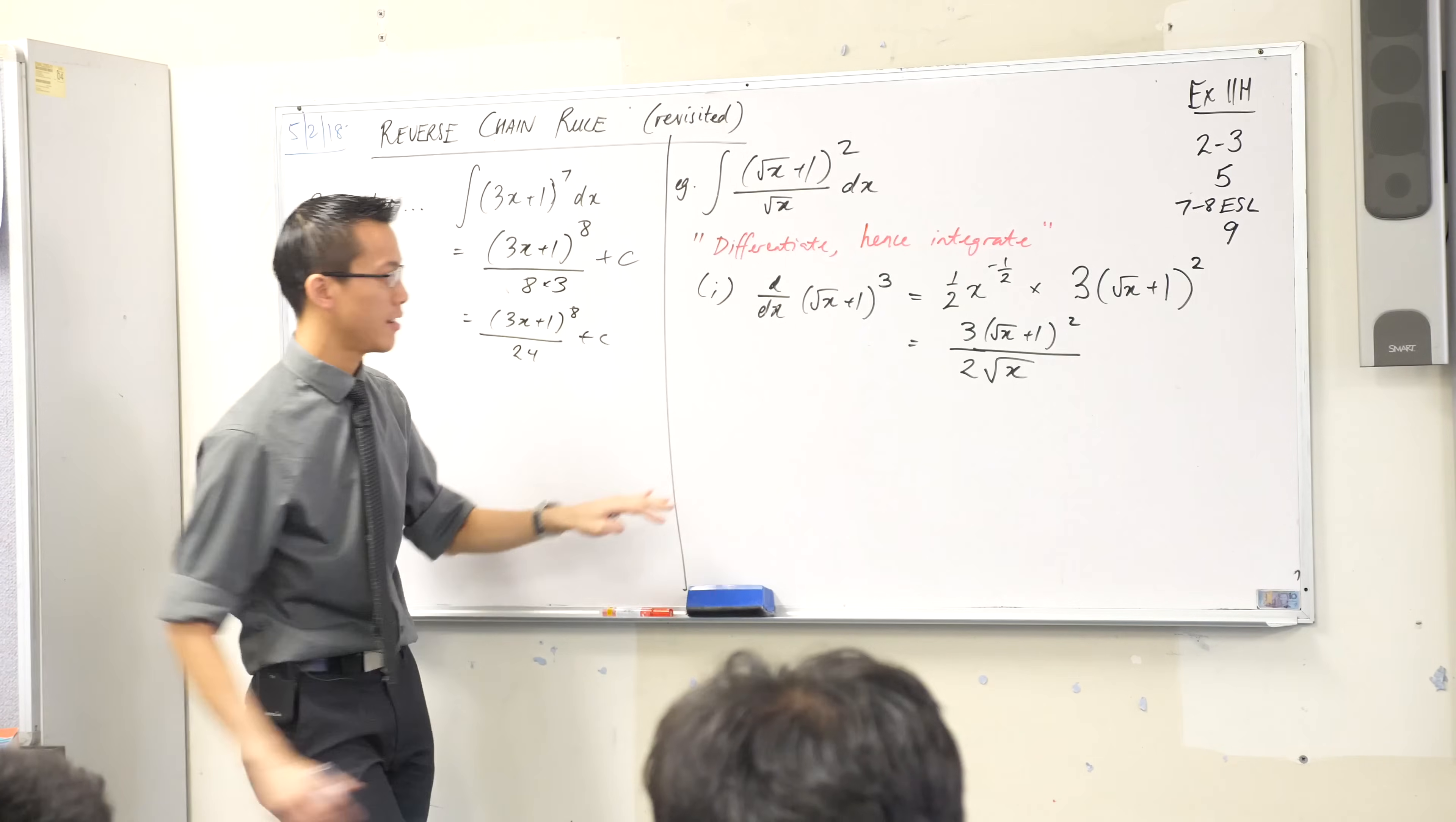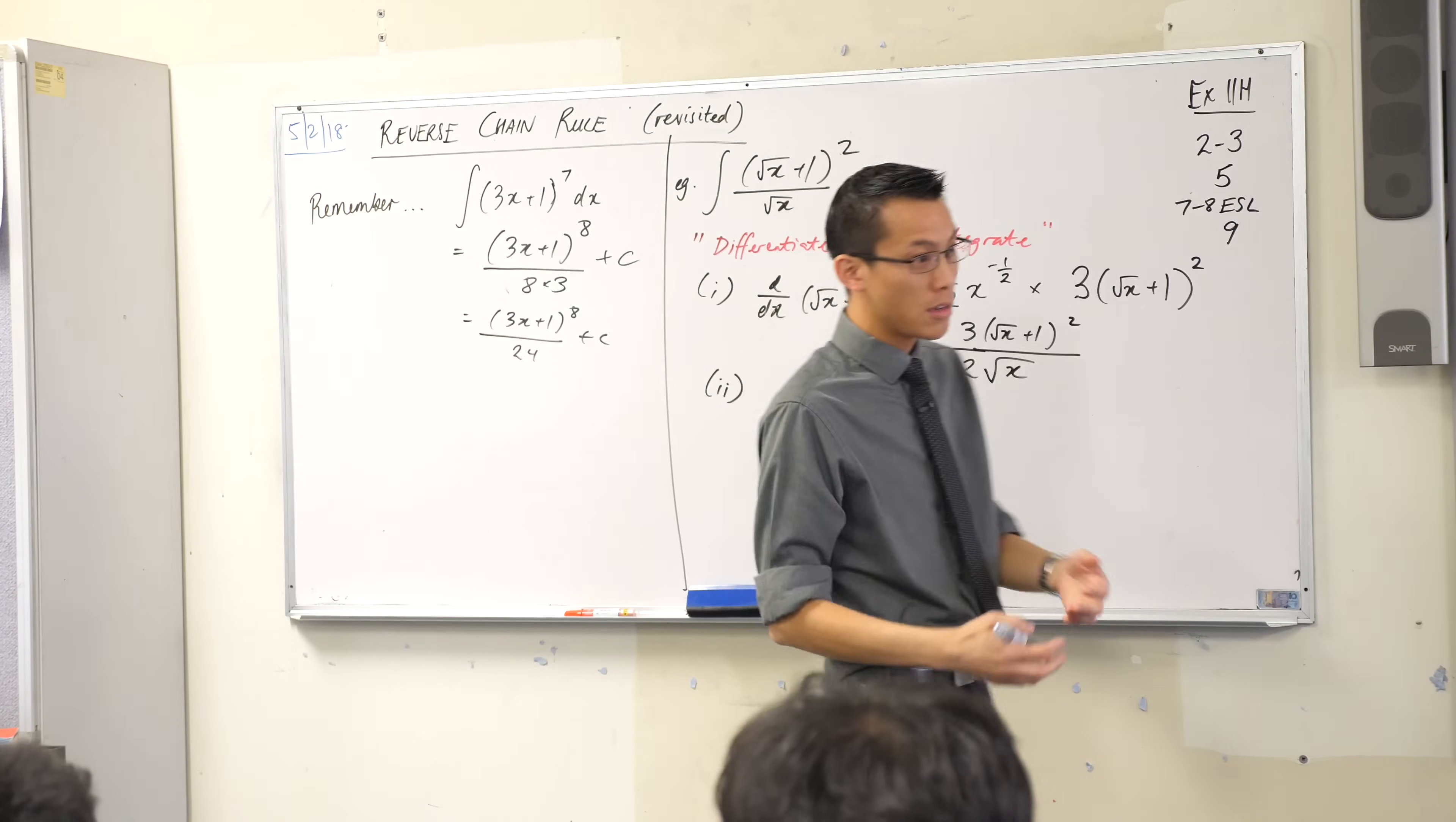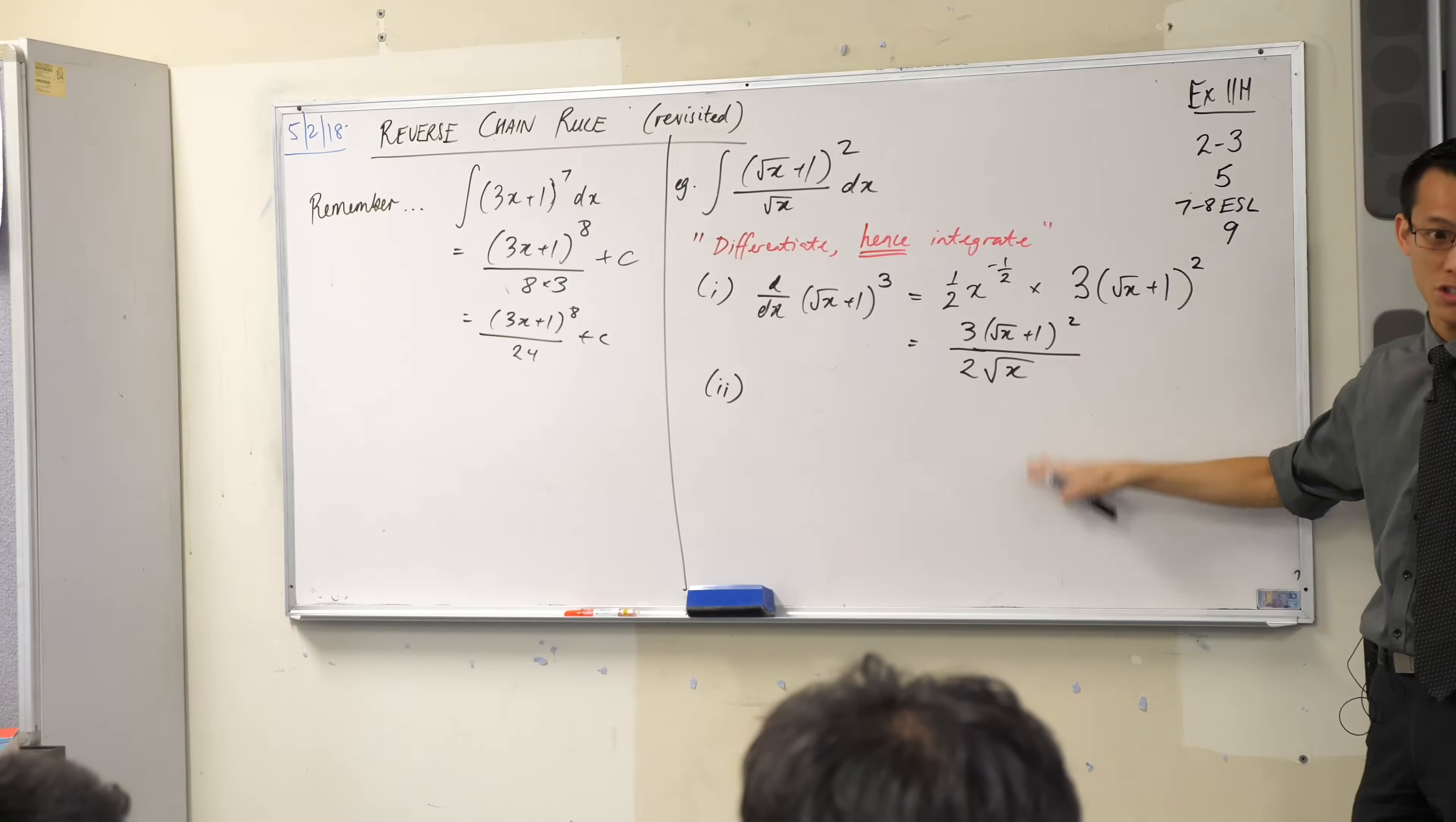So we've just done the differentiation. Now comes part two. Hence, and that word is really important. Whenever you see it in an HSC question it means you must use the thing that you just did. Sometimes you'll get 'hence or otherwise' which means here's a clue but you can do it however way you'd like. When you see 'hence' and no other qualification, your next line pretty much has to use this, or at least eventually you have to use it.